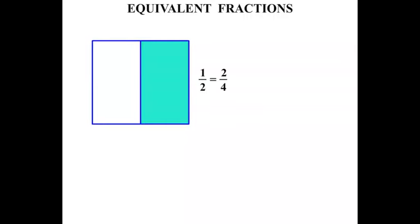Now go back to the half. If we split the diagram up into 6 pieces, 3 are shaded, so it's the same as 3 sixths. If we break it up into 10 pieces, 5 are shaded, so it equals 5 tenths as well.